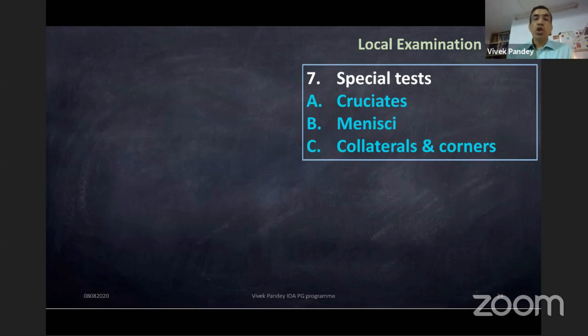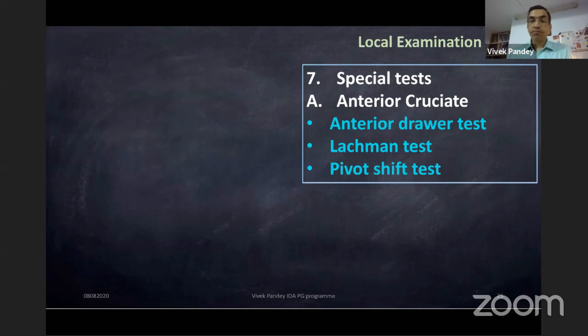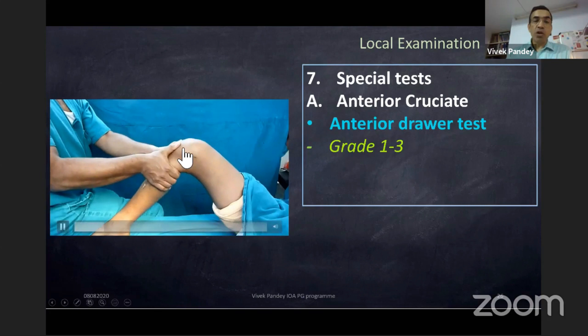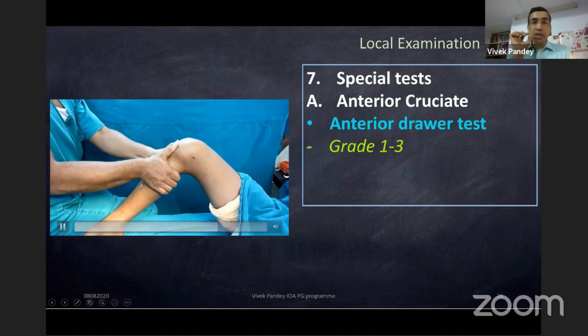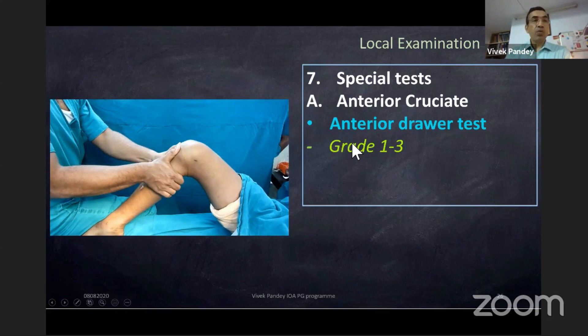For special tests: in anterior cruciate, remember only three tests — don't be distracted by fourth, fifth, or sixth tests. For the anterior drawer test: hip at 45 degrees, knee at 90 degrees. The thumb should always be on the joint line — never on the tibial tuberosity — because you want to feel how much the tibia is coming forward, and that is how you grade it: 3–5mm grade one, 5–10mm grade two, more than 10mm grade three.